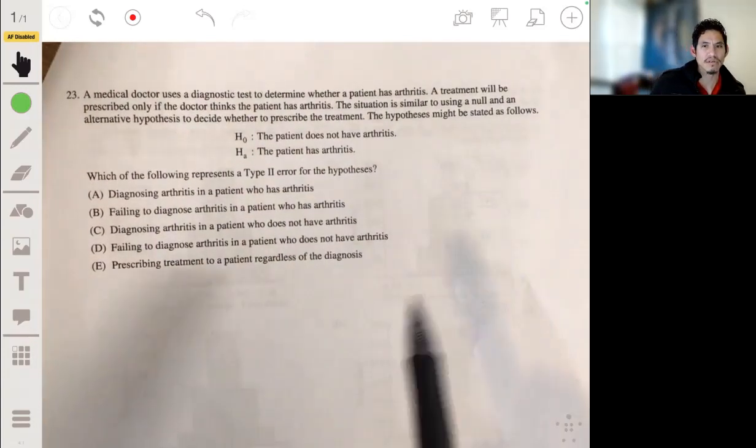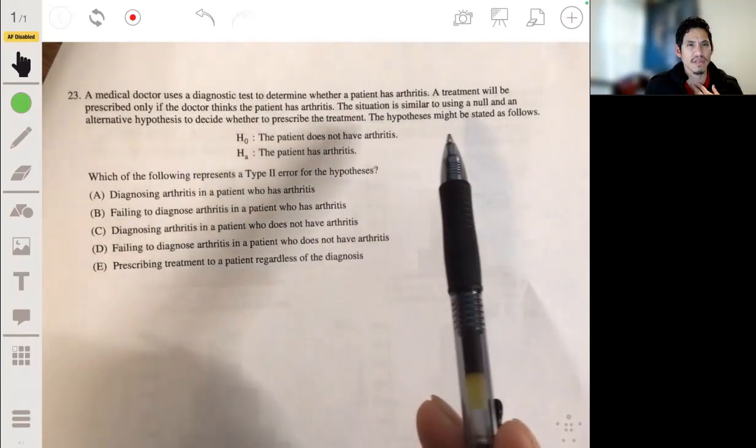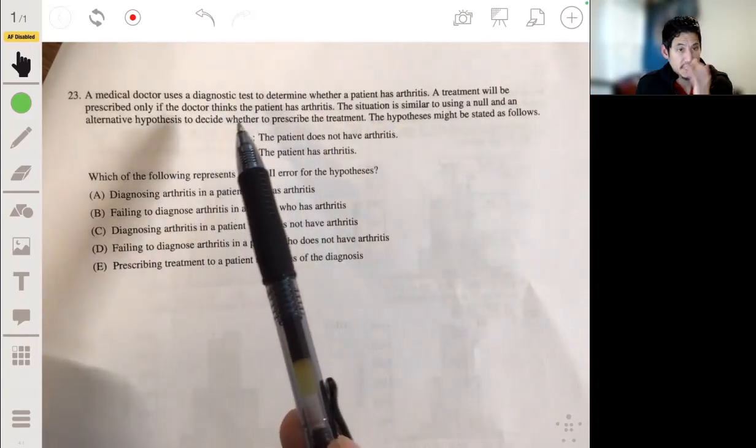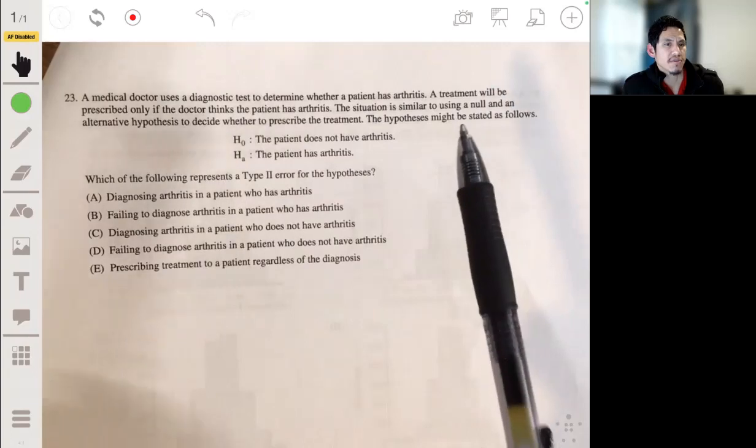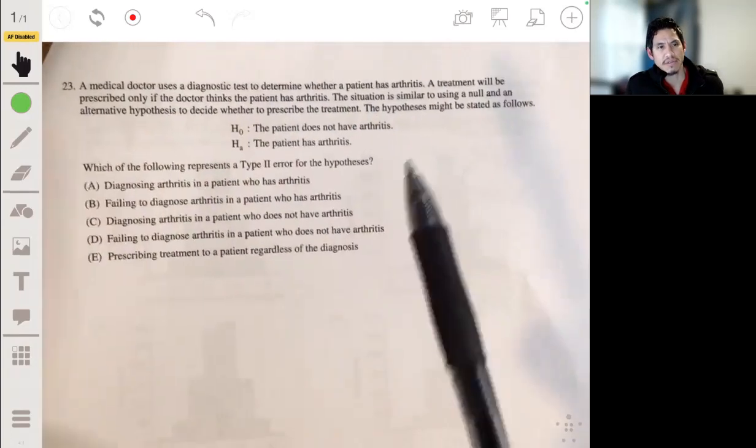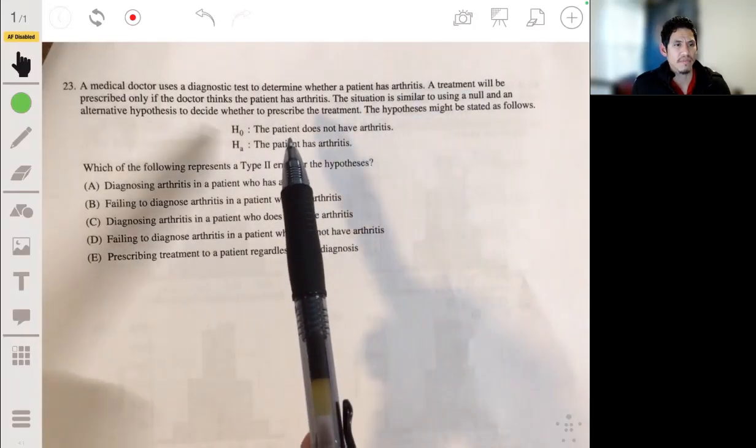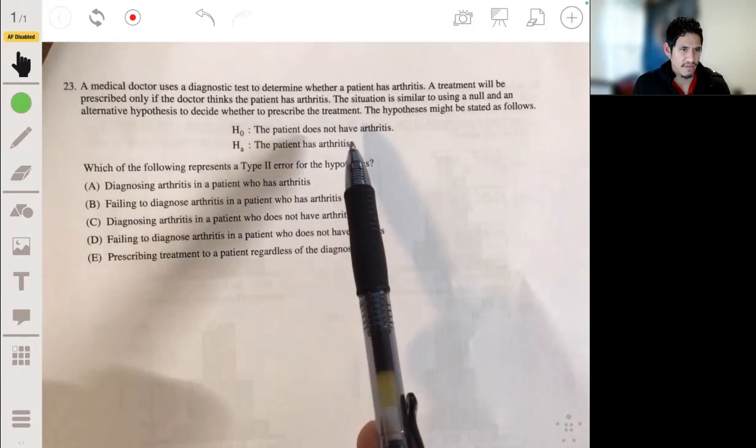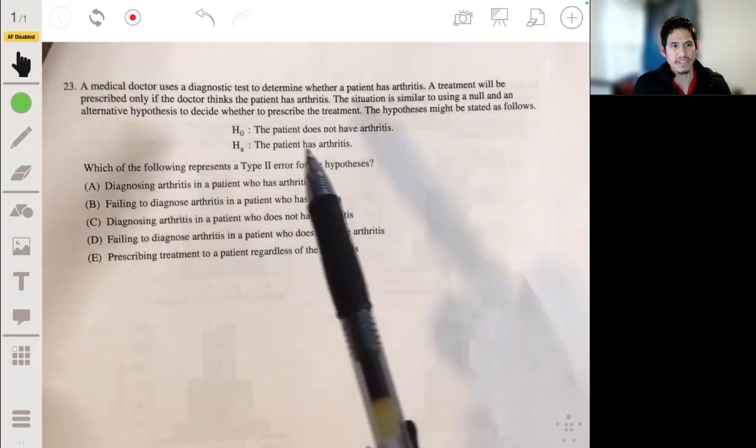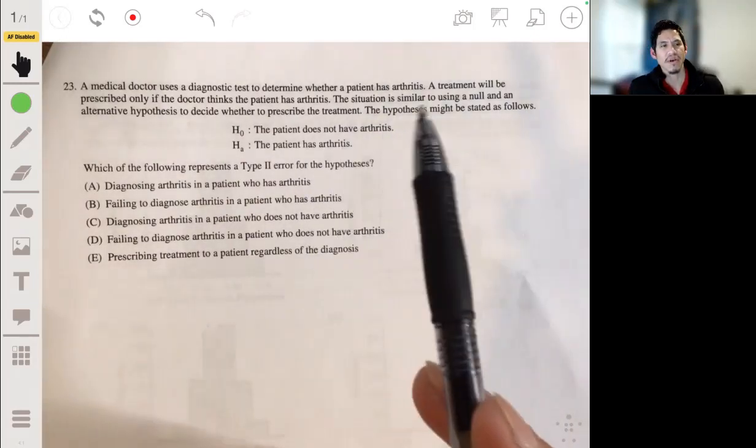A medical doctor uses the diagnostic test to determine whether a patient has arthritis. The treatment will be prescribed only if the doctor thinks the patient has arthritis. The situation is similar to using a null and alternative hypothesis to decide whether to prescribe treatment. The hypotheses might be stated as follows: H0, the patient does not have arthritis. HA, the patient does have arthritis.